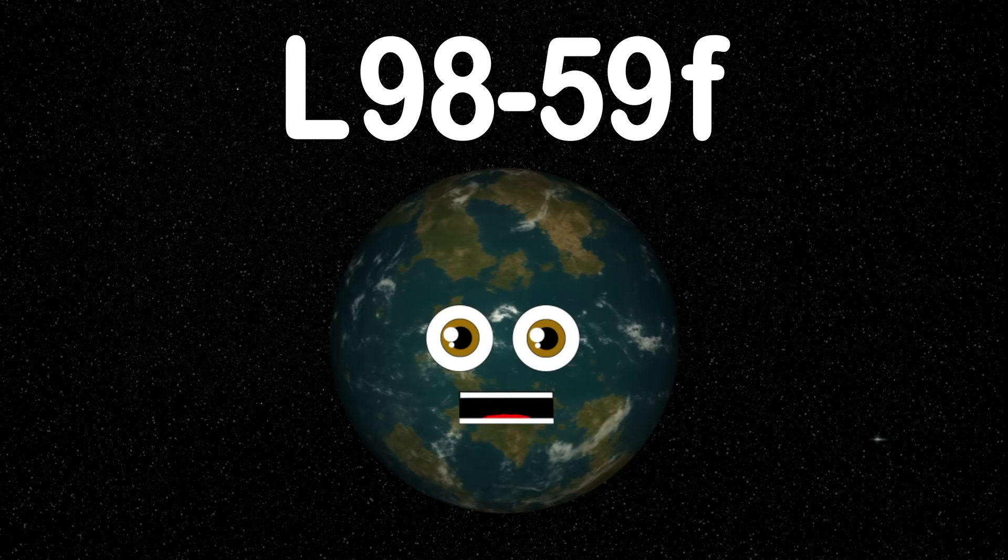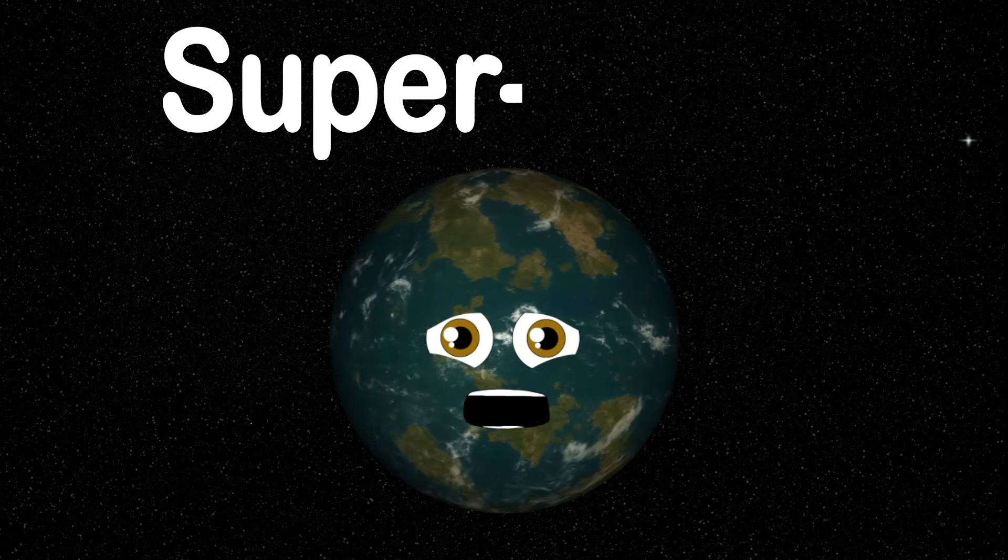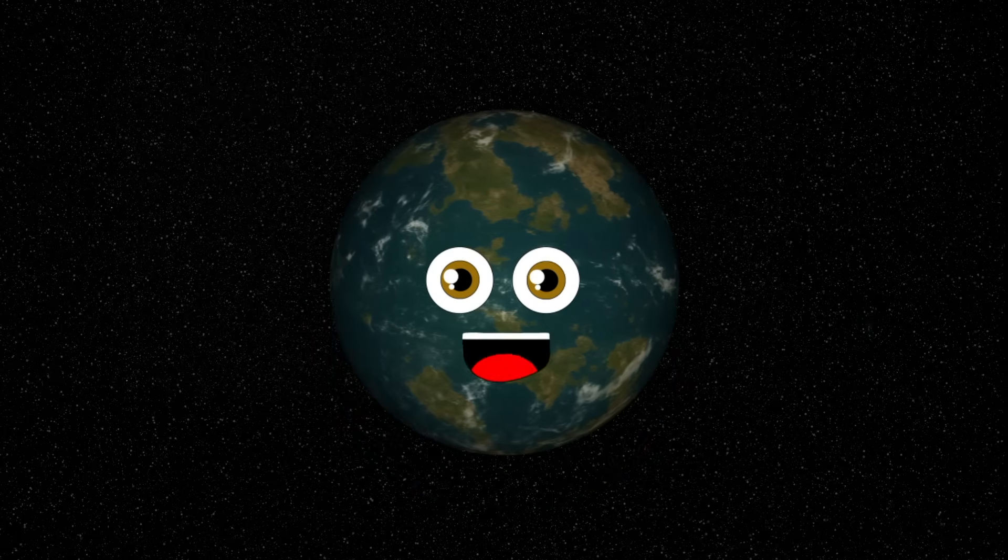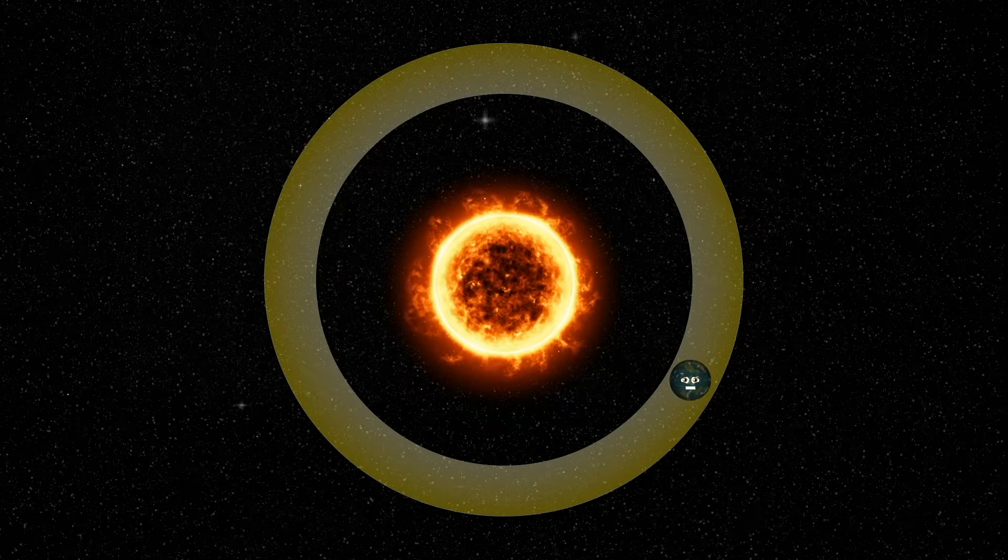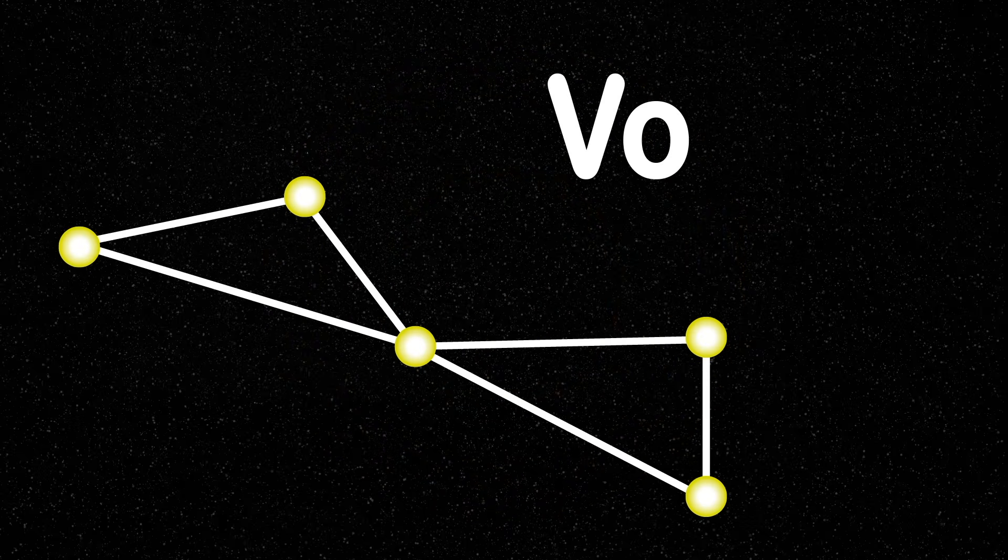My name is L98-59F. I'm considered a super earth created by some cosmic chef. I have the potential to be habitable in the Goldilocks zone of my host star. Now you know, in the constellation Volans.